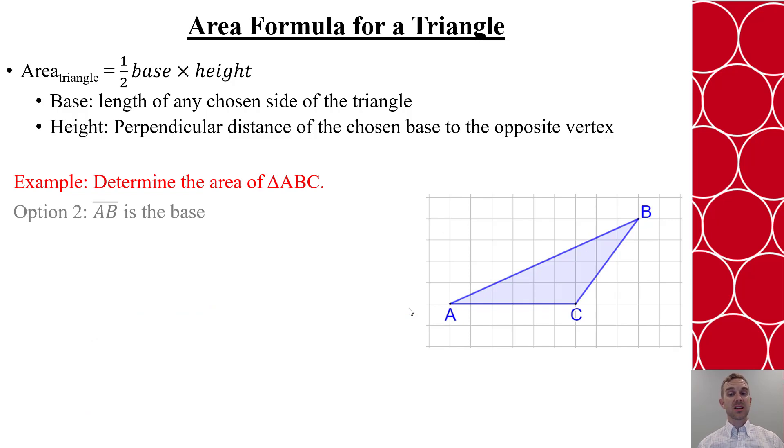Now I could use side AB to actually do my measurement as my base. I would have to use a program like GeoGebra to help me do the measurement, or I'd have to use some different parts of Pythagorean theorem. We're going to use GeoGebra as an approximation and say that's approximately 9.85 centimeters.